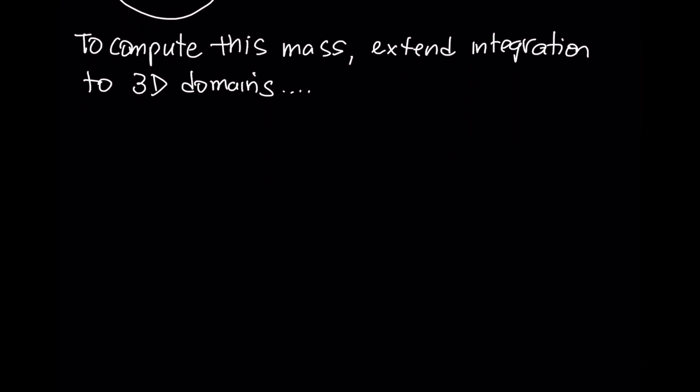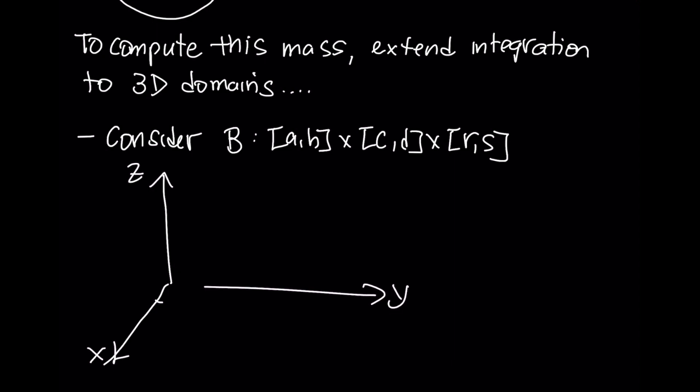So that means we're going to have to extend the subdivision concept to three-dimensional regions. So let's consider a box in R3, and it will be defined by this Cartesian product. And so we will talk about the following region, and we'll try to illustrate it as best we can with our usual XYZ axes. So here we'll have our A and B, C and D, here's R and S.